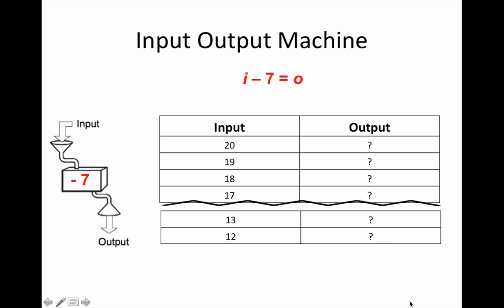Any number that's put into this input machine has seven taken away from it. Copy and complete the table for this input and output machine. Don't copy the question marks of course. Put the output numbers or answers in place of the question mark.